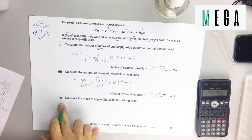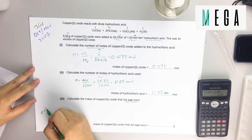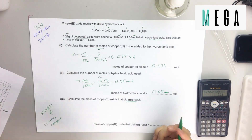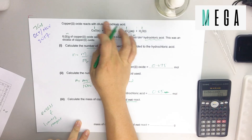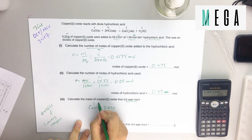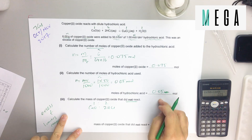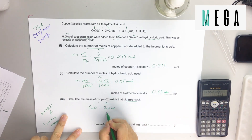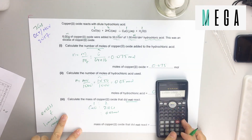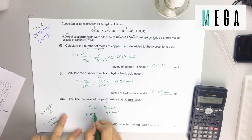Question three: calculate the mass of copper(II) oxide that did not react. When you have this kind of question, it relates to excess and limiting reagent. Use the equation: CuO to HCl ratio is 1 : 2. So if we have 0.05 mol of HCl, we require half of that in CuO — 0.05 divided by 2 = 0.025 mol of CuO required.